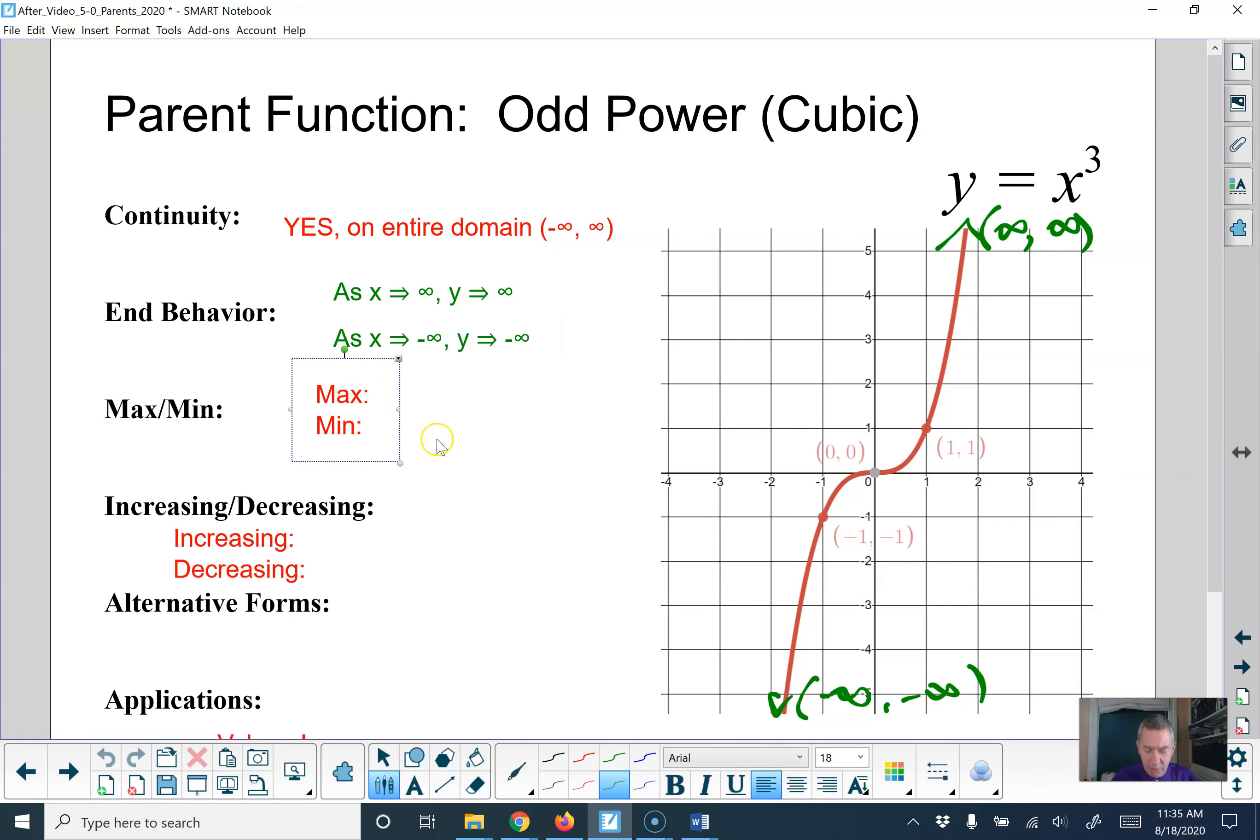Notice that it does not have any minimum or maximum points. It is also increasing everywhere. As you go left to right, it's increasing. It's increasing pretty quickly down here, then it increases very slowly, then it starts increasing faster and faster again. But it's increasing on the whole domain, negative infinity to infinity. And it's decreasing never.